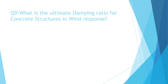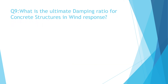Question number nine. What is the ultimate damping ratio for concrete structures in wind response? A: 2.5%, B: 3%, C: 4%, D: 5%. The correct answer is A: 2.5%.